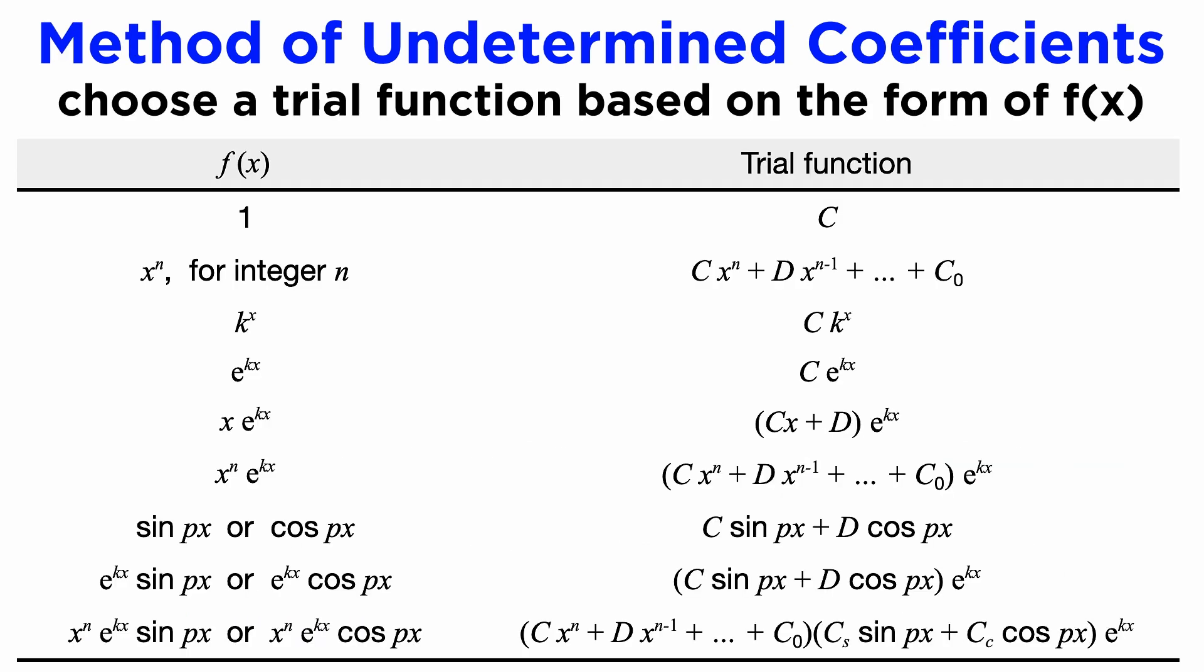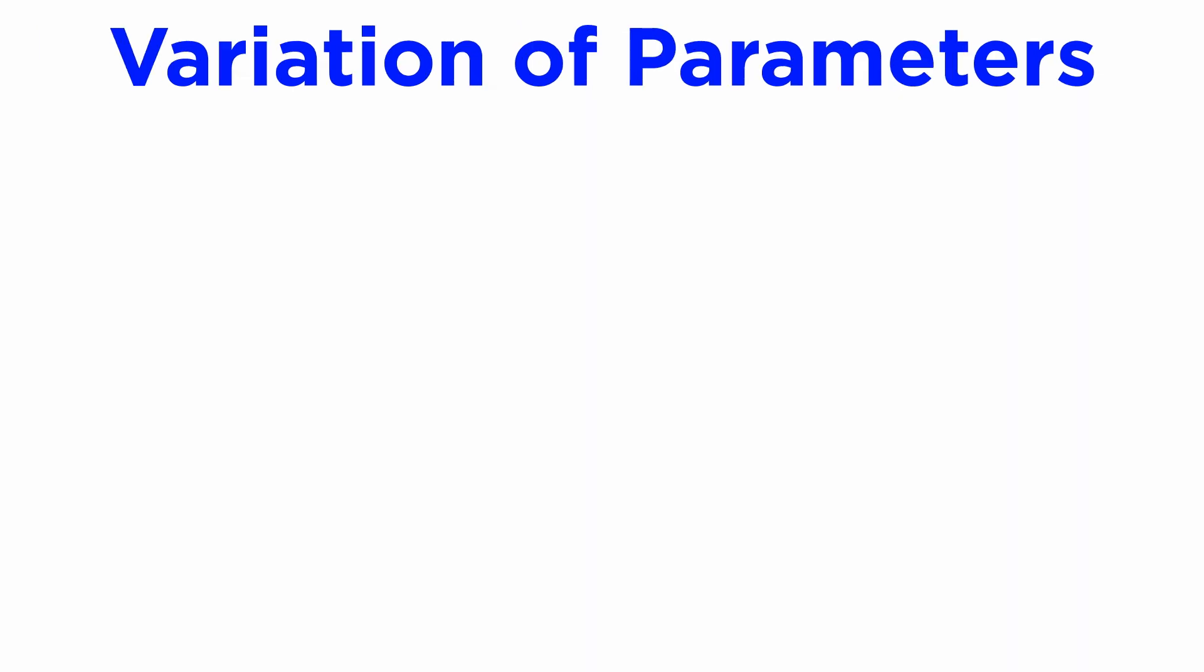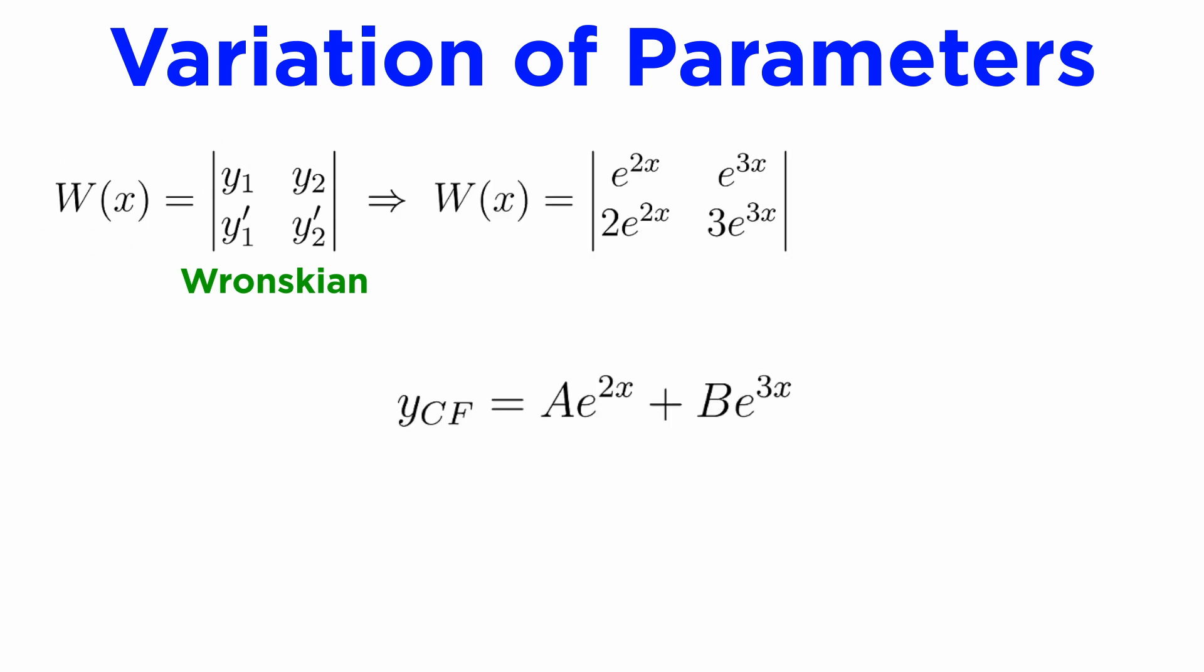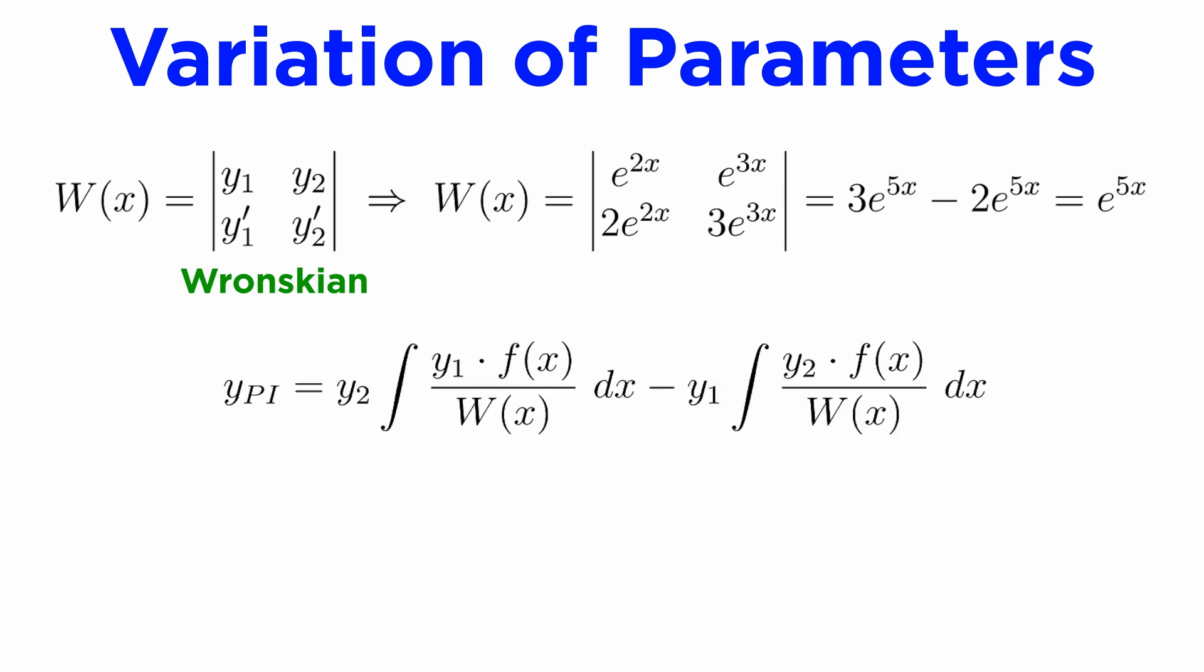That was the method of undetermined coefficients, but let's compare it with another method for finding the particular integral called variation of parameters. Firstly we need to calculate something called the Wronskian, which is defined by the determinant of a matrix made up of the basis functions of our complementary solution, y1 and y2, and their derivatives. In our example, the basis functions are the exponentials e^(2x) and e^(3x), which have derivatives 2e^(2x) and 3e^(3x). So we can compute this determinant and get e^(5x) as our Wronskian. Now, to find the particular integral, we need to use the following formula. Our particular integral will be equal to y2 times the integral of y1 times f(x) divided by W, minus y1 times the integral of y2 times f(x) divided by W. This formula will immediately produce the particular integral if we can evaluate these integral terms, and no plus C's are needed.